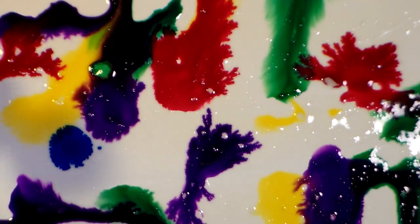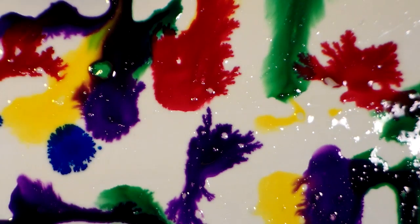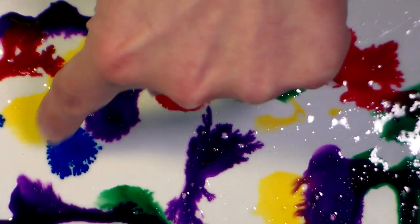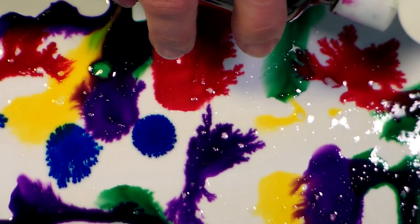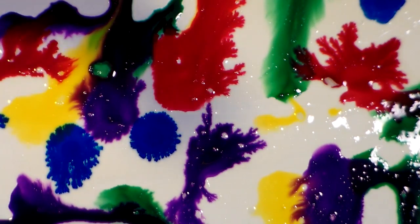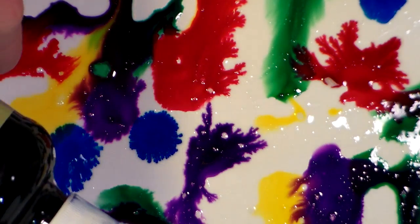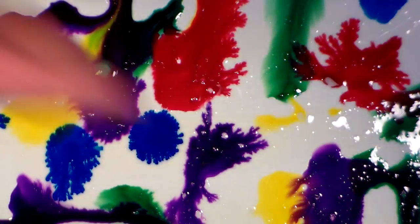You can see as it dries it doesn't move around as much, so you can kind of play with it. Like that one's kind of moving around in a pretty good circle there. You can play with it to get the effect that you want, and I think it'd be kind of just fun to make backgrounds, or maybe just for a science experiment with the kids or something.